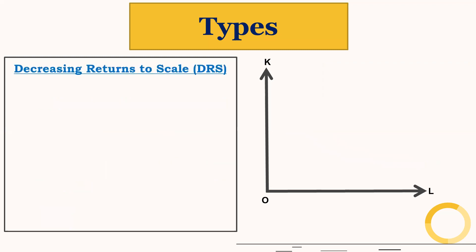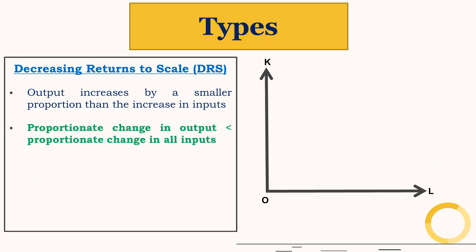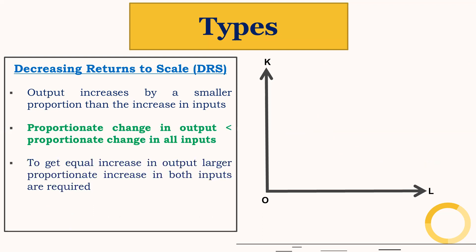Second is decreasing returns to scale. Here output increases by a smaller proportion than the increase in inputs. So proportionate change in output is less than proportionate change in all inputs. In other words, to get an equal increase in output, a larger proportionate increase in both inputs is required, and therefore the distance between isoquants is increasing.